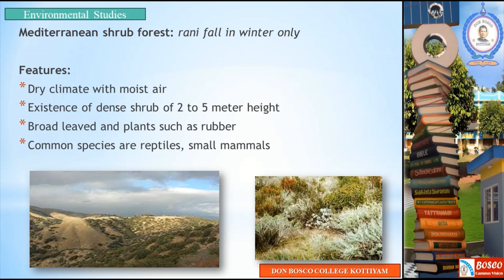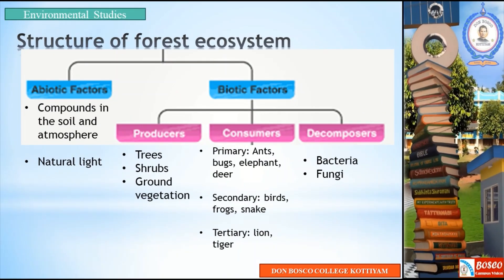Let us look into the structure of the forest ecosystem. As we have learned, an ecosystem can be divided into two: biotic factors and abiotic factors. Abiotic factors include compounds in soil and atmosphere, non-living organisms, and natural light. In biotic factors, it can be divided into producers, consumers, and decomposers. Producers include trees, shrubs, and ground vegetation.